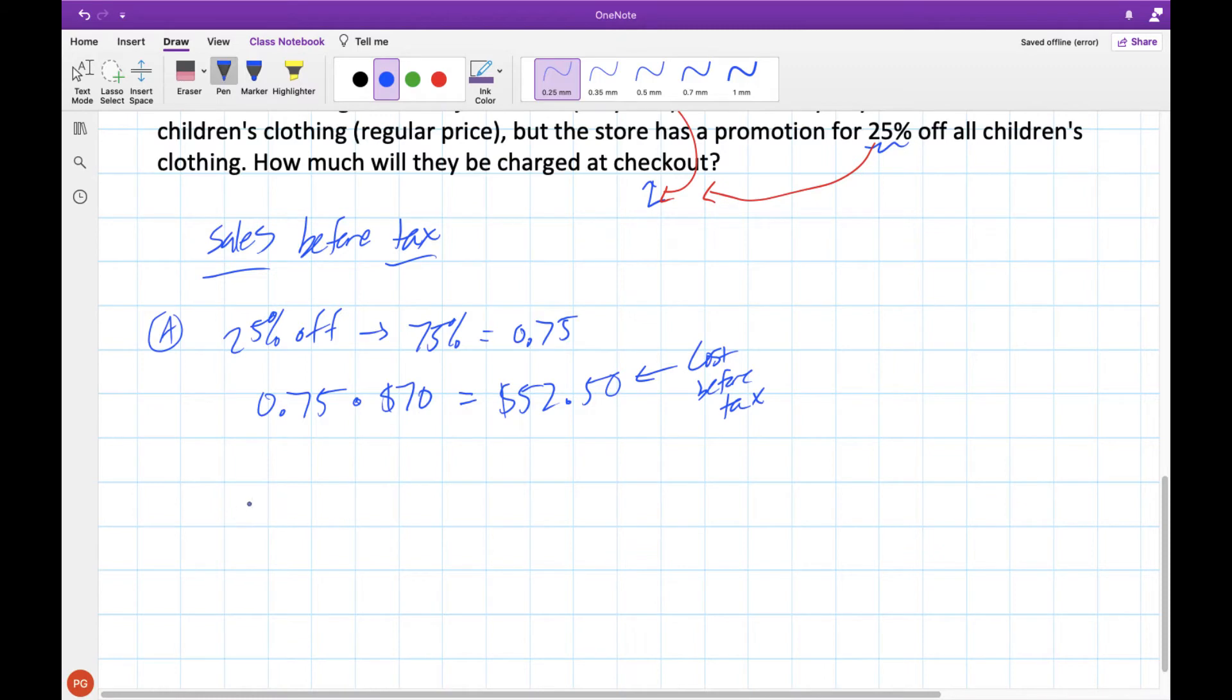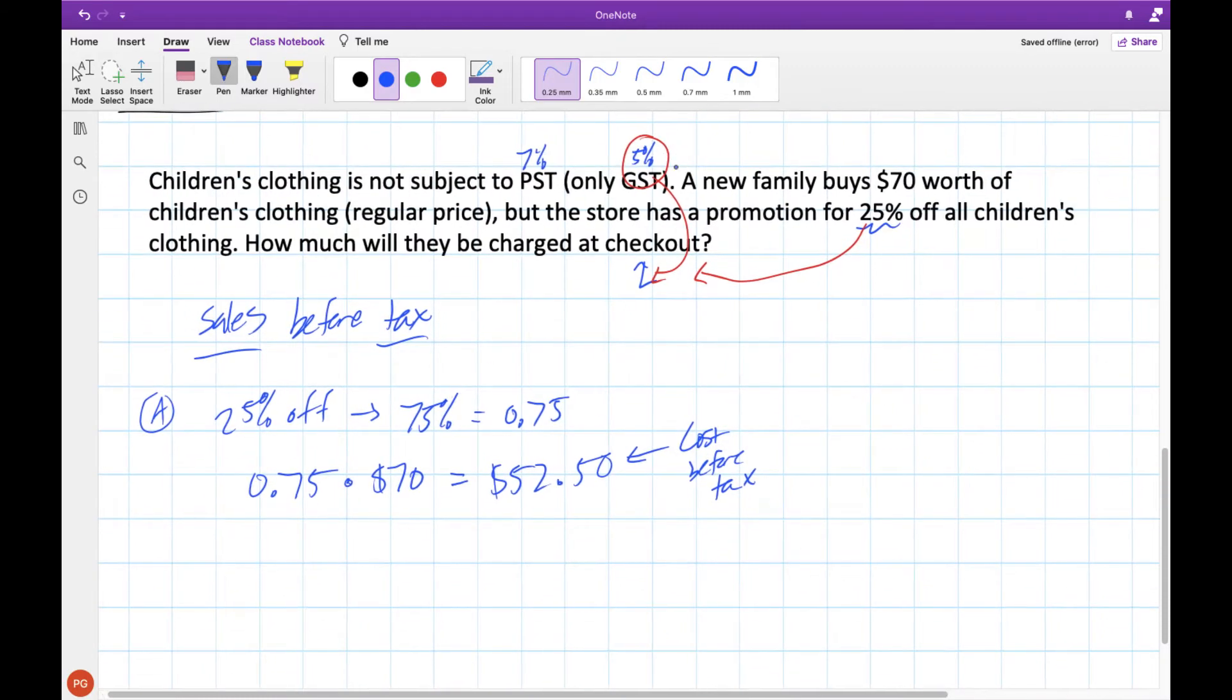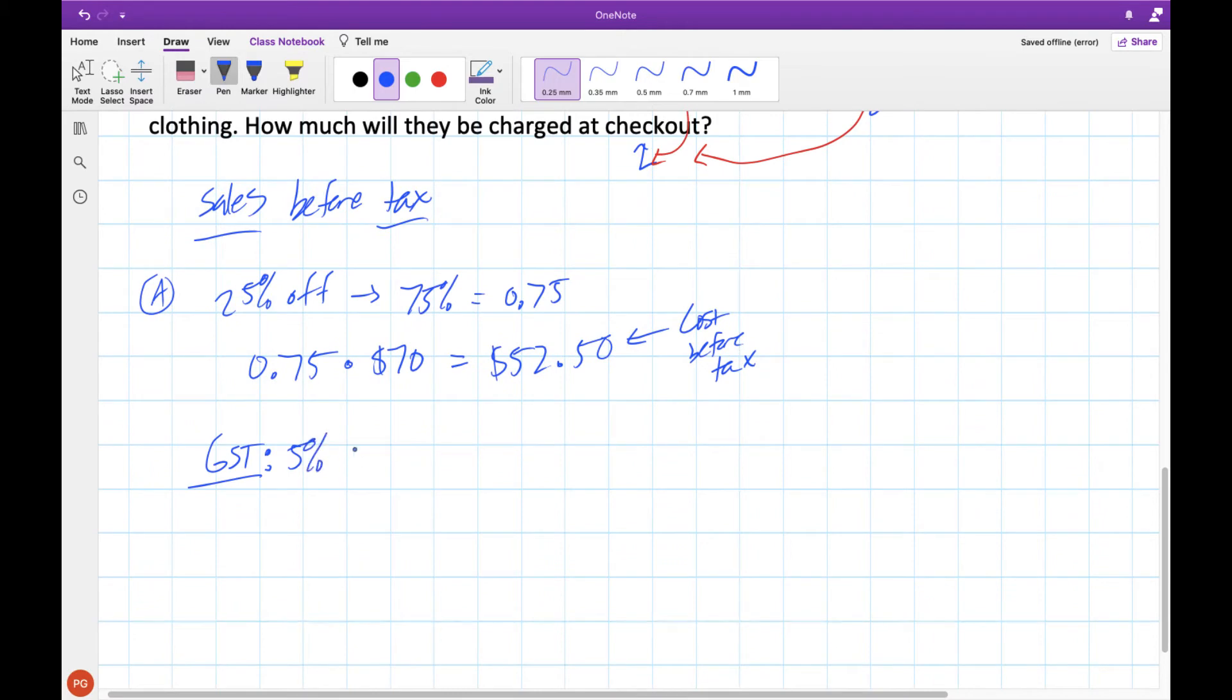Now, like I showed you before, if we have tax, in this case, only GST of 5%, this is the same as 105% of our price, right? When we charge an extra 5%, we get everything already plus an extra 5%, which is 105%. So to calculate that, we would do 1.05 times 52.50, multiply those two together, and we would get an answer of $55.13. That's how much you would get charged at checkout for your clothing items after the 25% off.